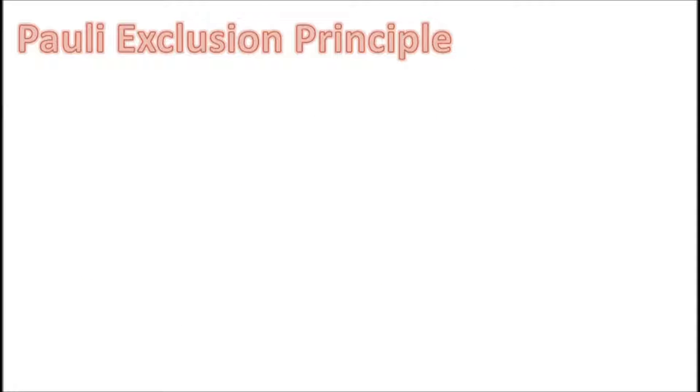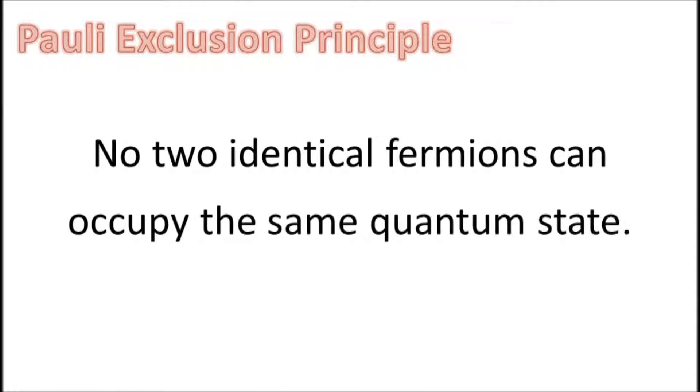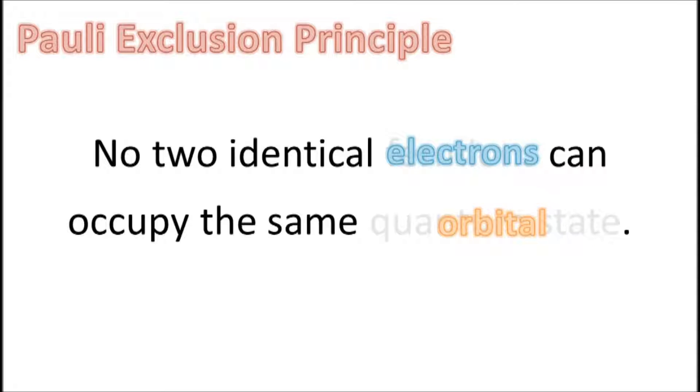Pauli Exclusion Principle states that no two identical fermions can occupy the same quantum state. For electrons, a quantum state refers to an orbital, and no two identical fermions means that the two electrons occupying the same orbital have opposite half-integer spins.